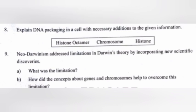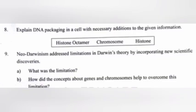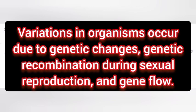Question 9: Neo-Darwinism addressed limitations in Darwin's theory by incorporating new scientific discoveries. Part A: What were the limitations? Answer: During Darwin's time, genetics had not yet developed. Charles Darwin had no idea about the genetic basis of variations and inheritance. Part B: How did the concept of genes and chromosomes help overcome these limitations? Answer: Variations in organisms occur due to genetic changes, genetic recombination during sexual reproduction, and gene flow.